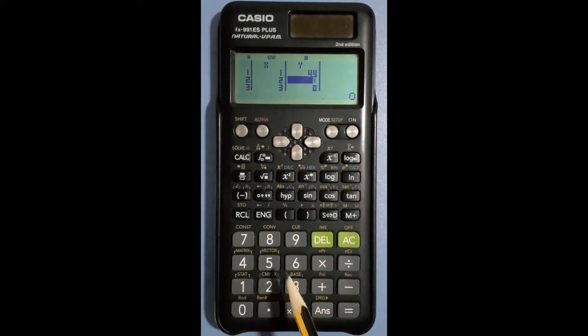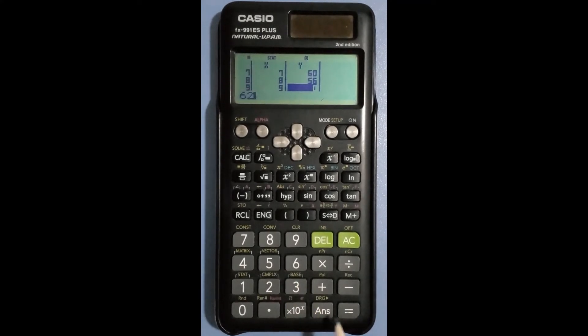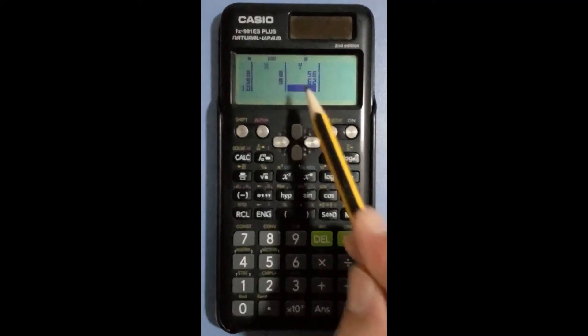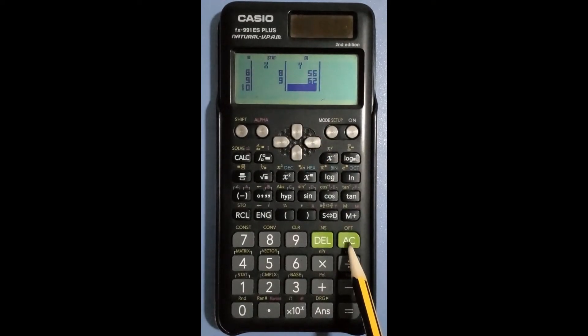The second is 52, so type 52 then press enter, and so on until we enter the nine values of Y. Once finished entering the data, we need to store them by pressing the AC button to store and process the data.